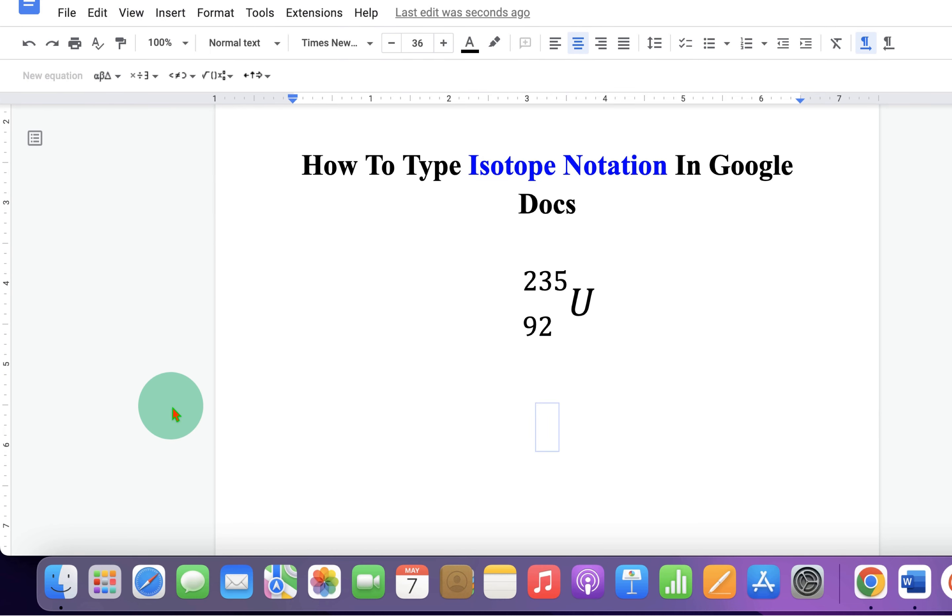You will see this blue box with the cursor blinking inside it. Now, click on the Math Operator and select this option: X, A, B.